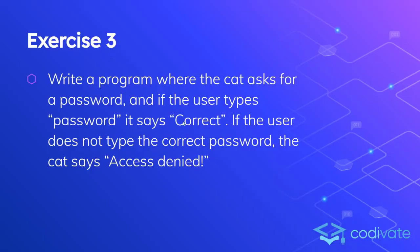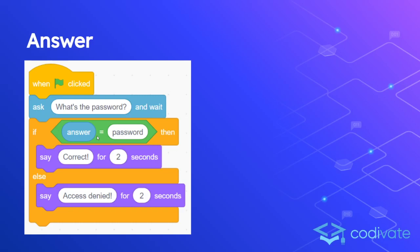Next: write a program where the cat asks for a password, and if the user types the correct password — which in this case is the word 'password' — it will say 'correct.' If not, it'll say 'access denied.' This shows you that you don't necessarily need numbers — you can compare words as well. So: ask 'what's the password?' If the answer is equal to the word 'password,' say 'correct.' Otherwise, say 'access denied.'